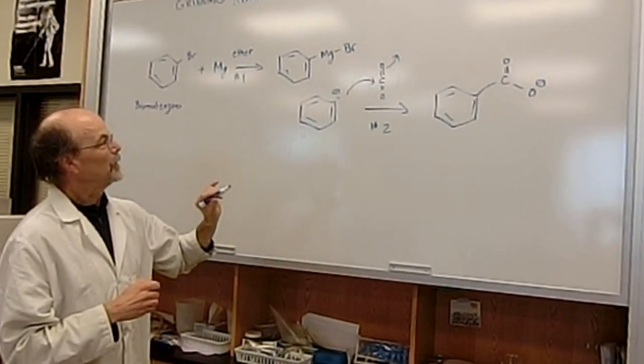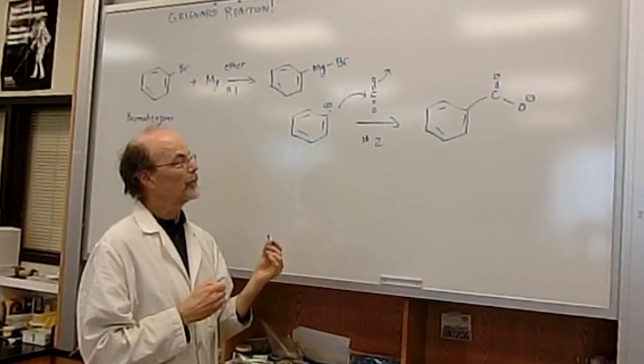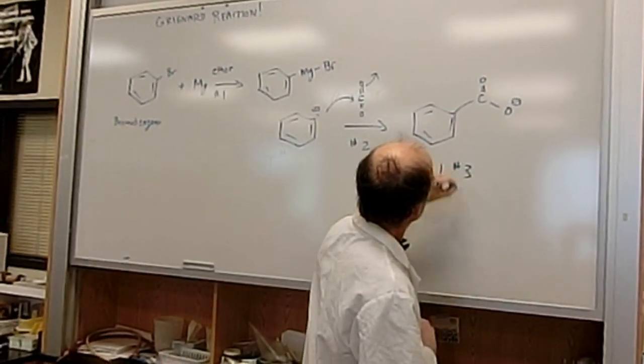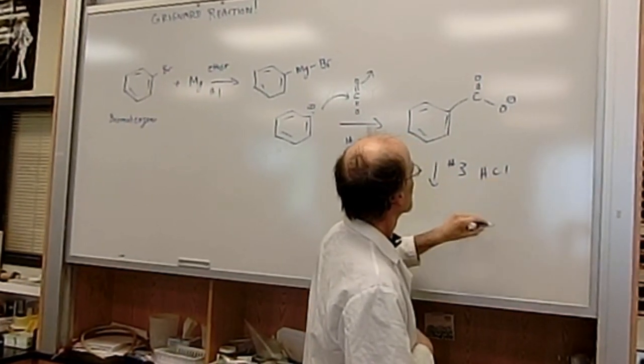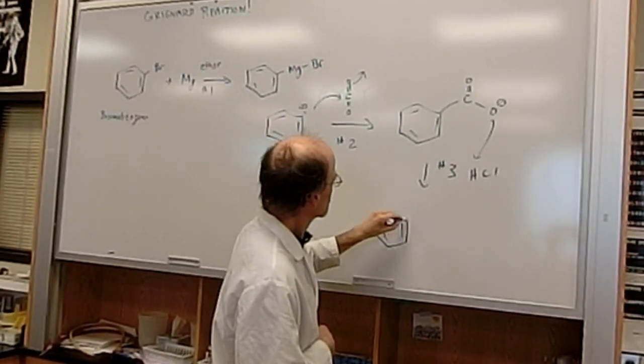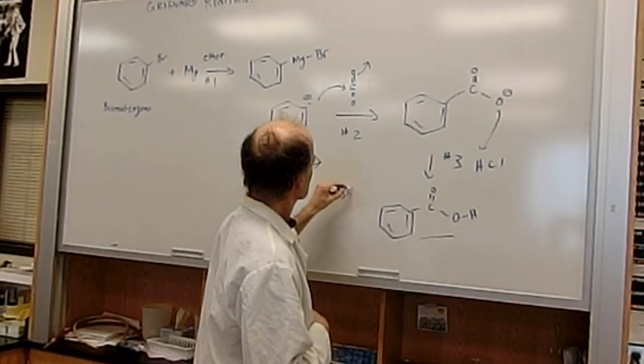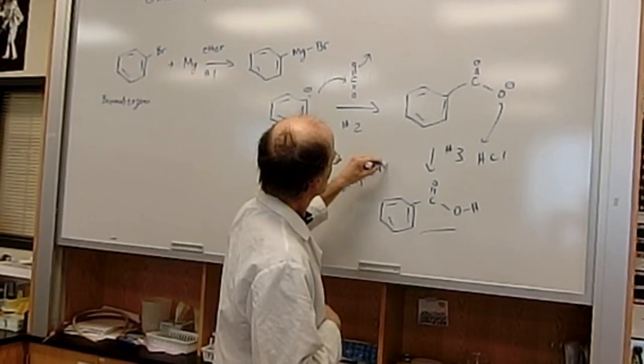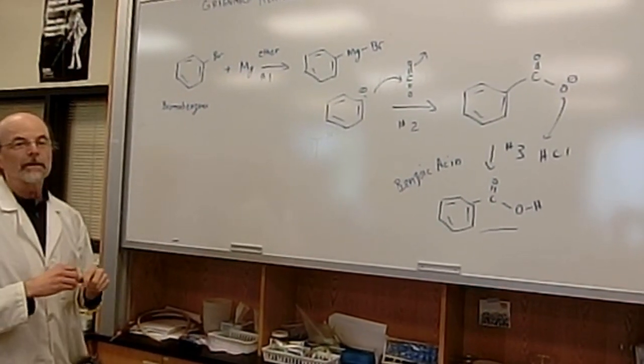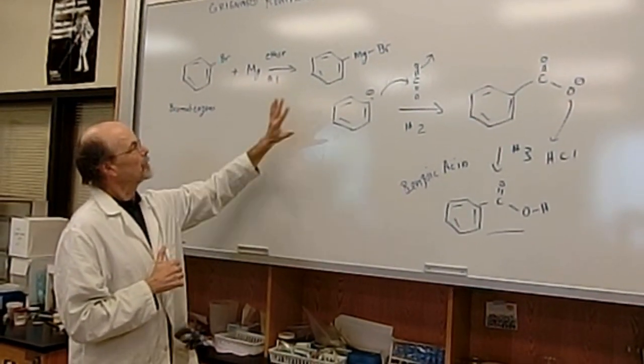At this point here, this will still be not quite the form we want. We do want to end up making benzoic acid itself, the protonated version. So step number three, we'll simply add hydrochloric acid, grab that proton, and lo and behold, we will have made this from scratch, this material from the bromobenzene and the magnesium. That'll be our reaction for the day. First off, we'll show you the setup for this step here.